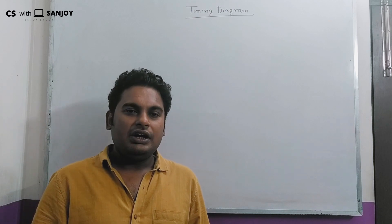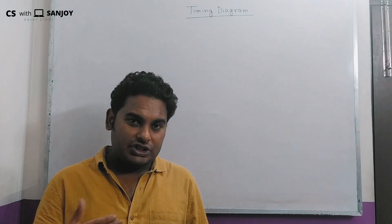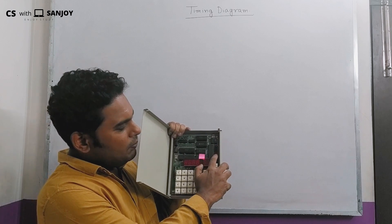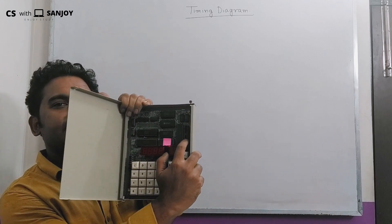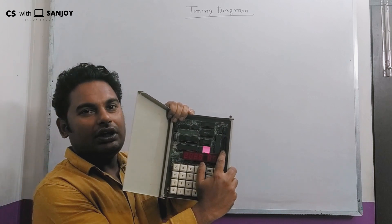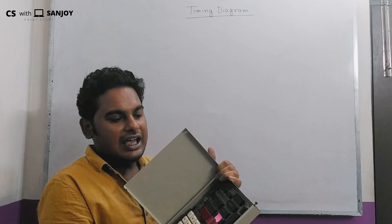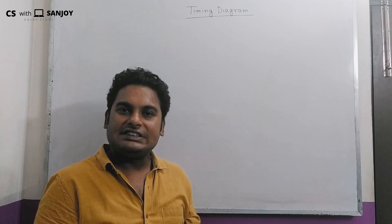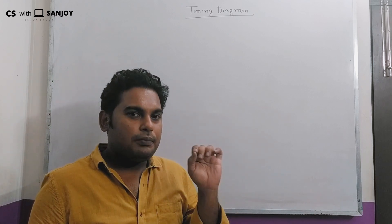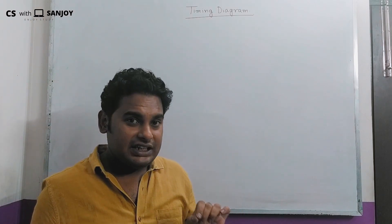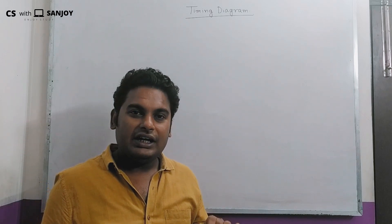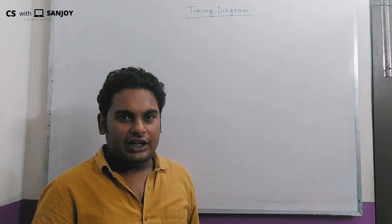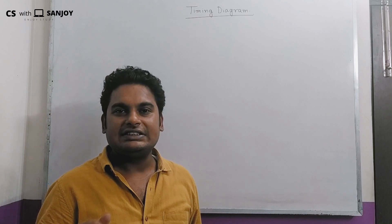The 8255 PPI has ports. There are 26 pins total. The 26 pins include 3 ports: Port A, Port B, and Port C. Every port is 8 bits, giving 24 pins for the three ports. Pin 25 is GND and pin 26 is VCC.